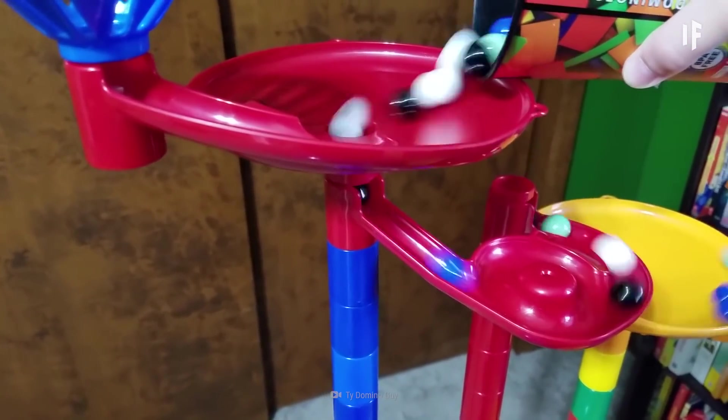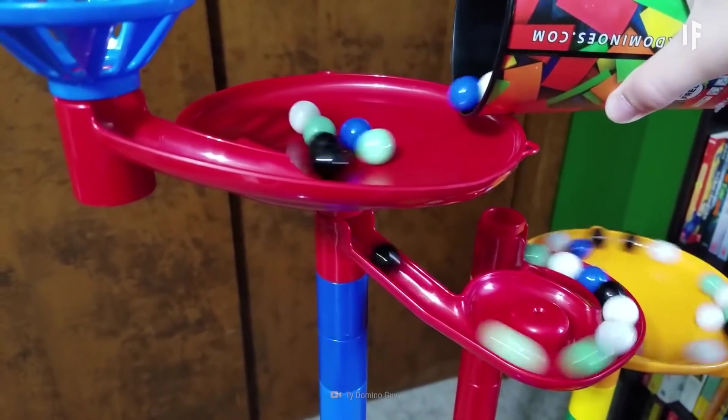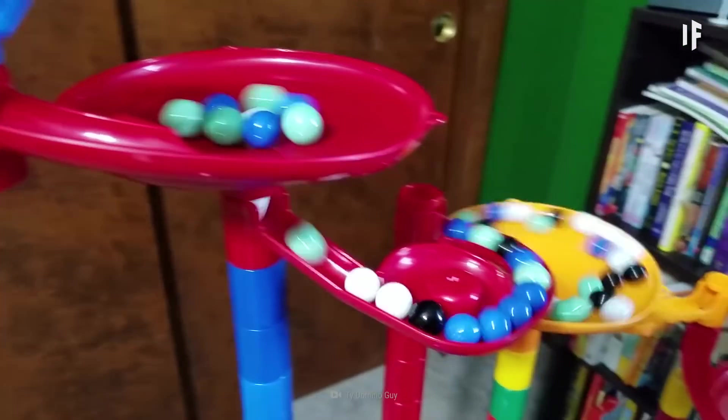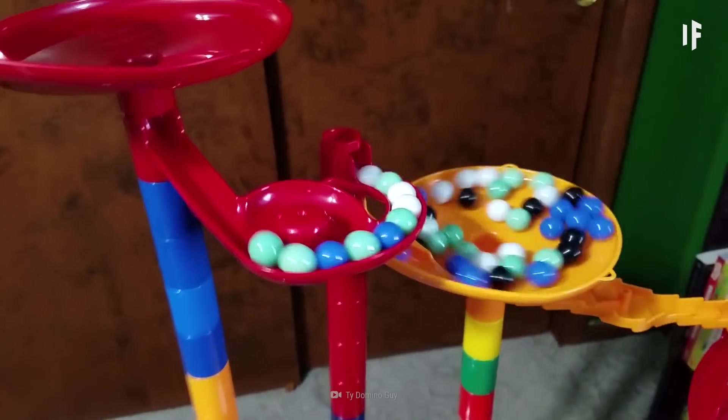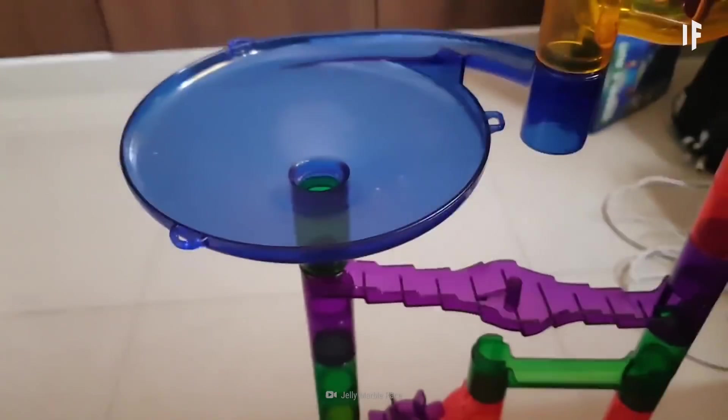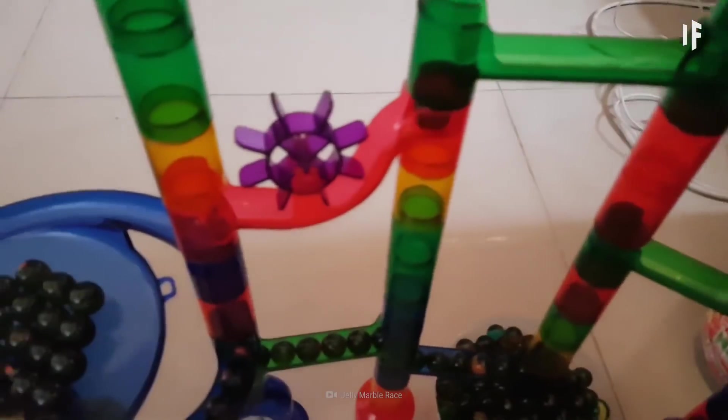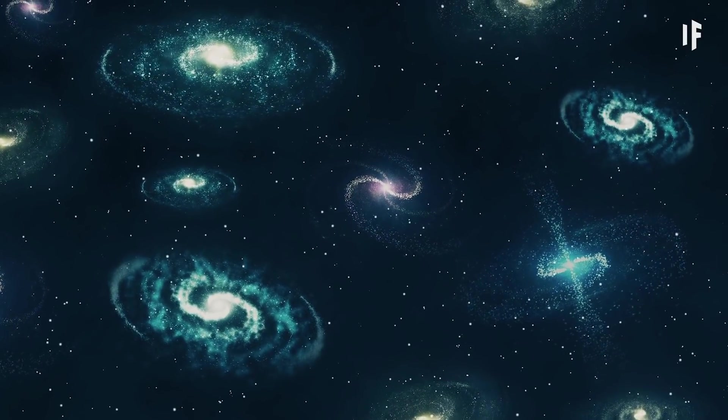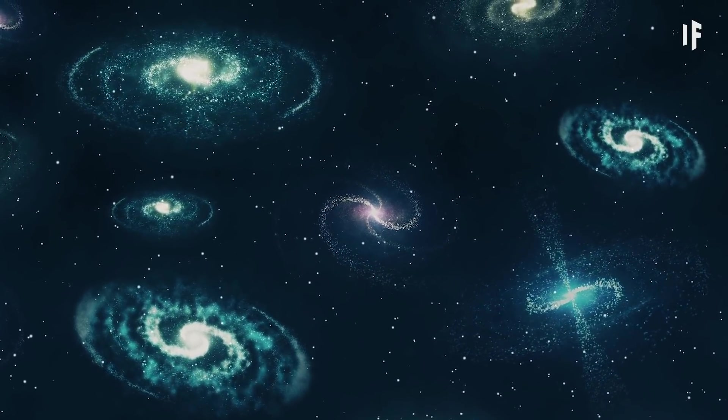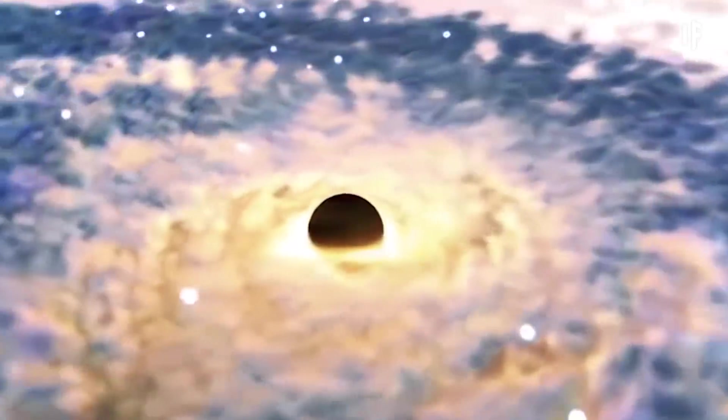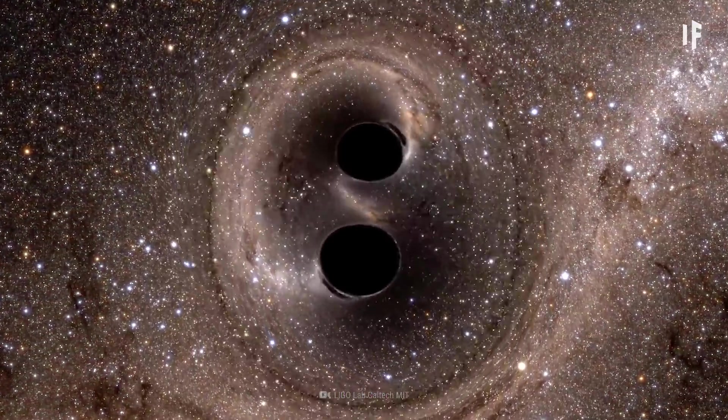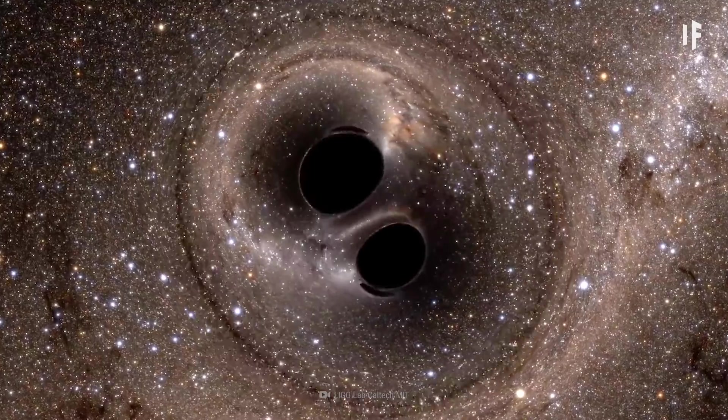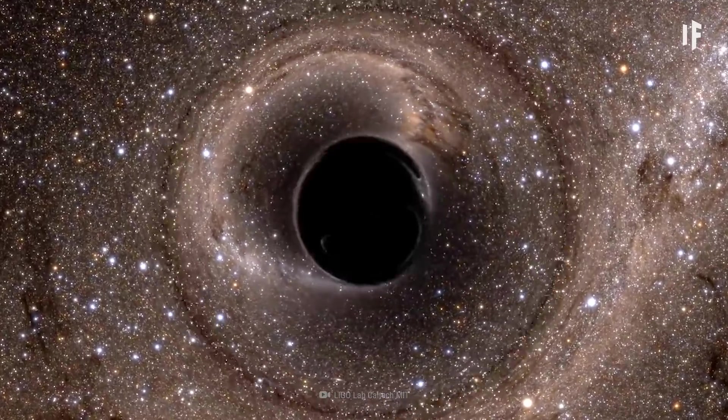Going back to our ball example, you can see that if you have 100,000 galaxies all moving towards the same destination, the odds are that some, if not most of them, are going to collide with each other. And if you've been watching our videos, you probably know that almost every one of those galaxies would have a black hole at its center. So what can we expect to happen when nearly 100,000 black holes merge with one another?